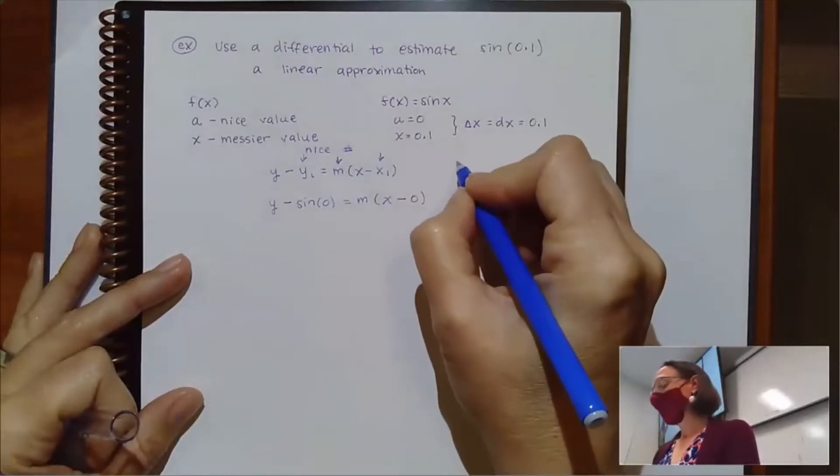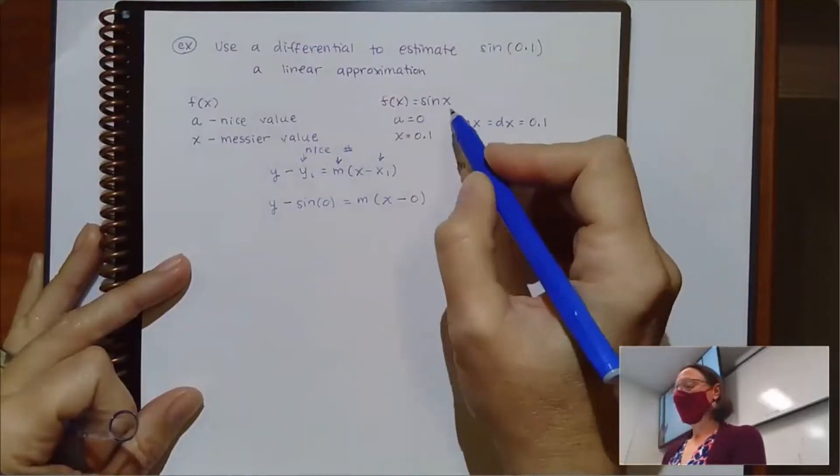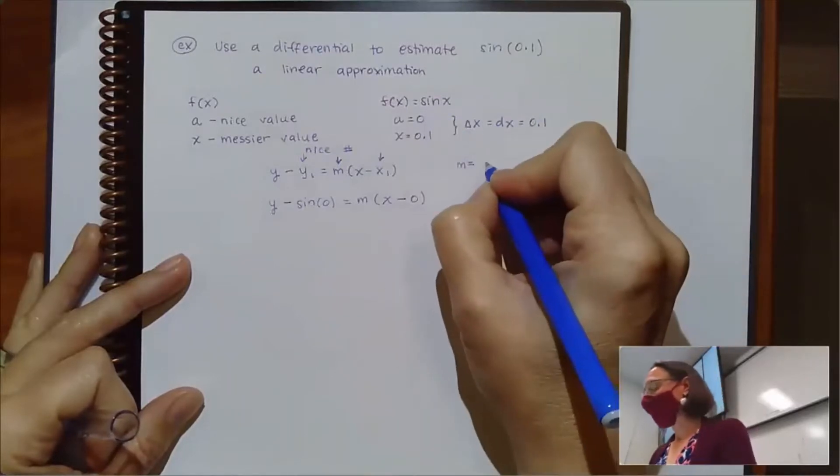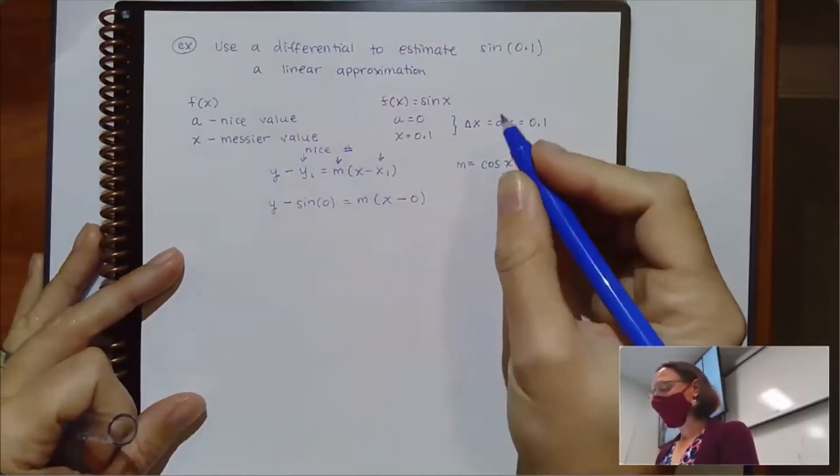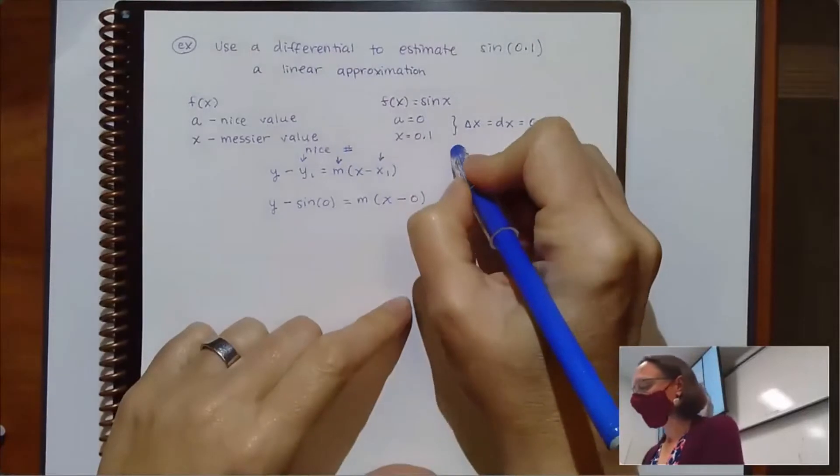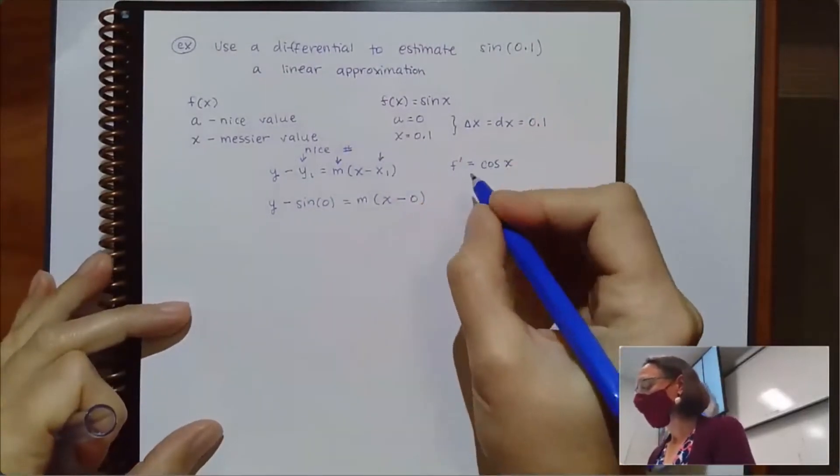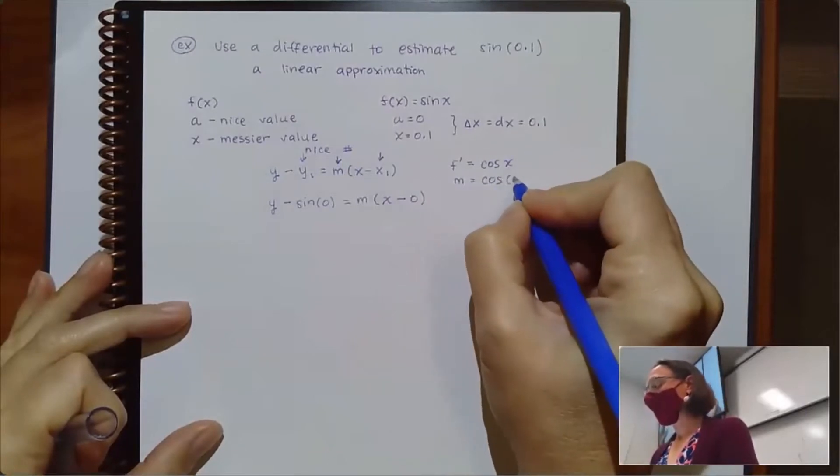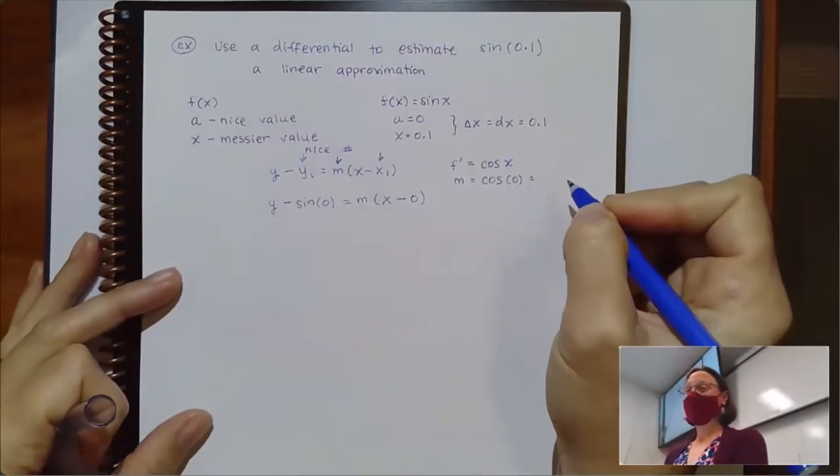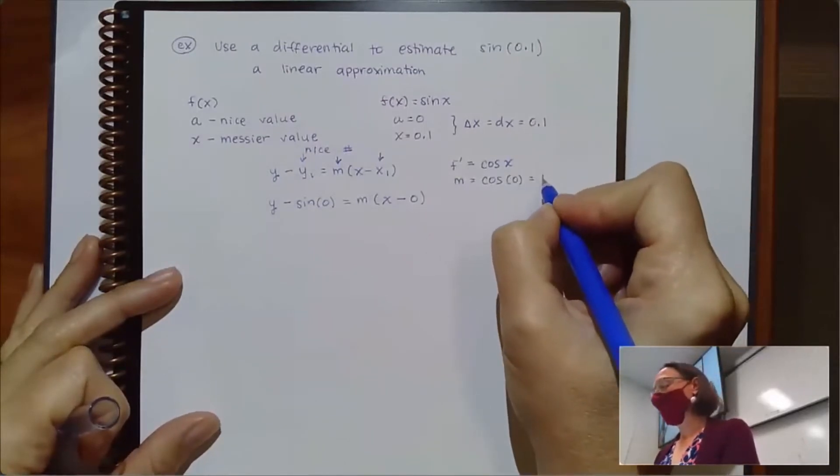And we're also going to figure out the slope using the nice number. To find that slope, we're doing the same thing that we always do, taking a derivative. The derivative of sine of x is cosine of x, which means that my slope where I care about it, f prime, would be at 0 or cosine of 0, and cosine of 0 is 1.